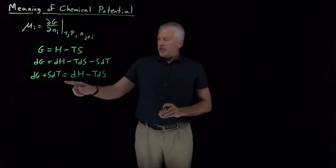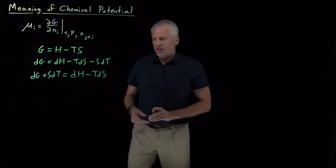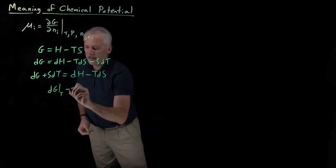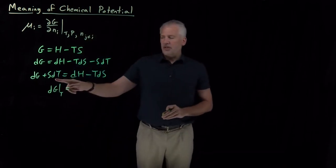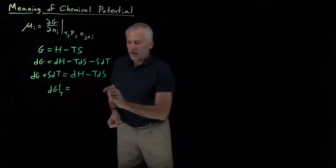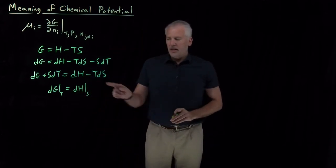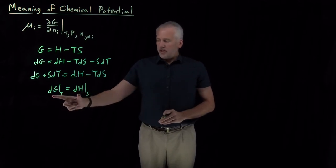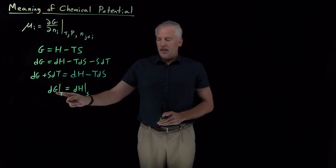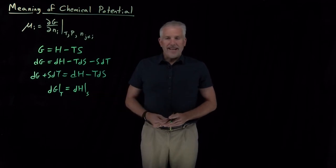Now if I bring the SdT term over to the other side, I can say dG plus SdT is equal to dH minus TdS. Since I often think about Gibbs free energy when the temperature is held constant, if the temperature is constant, the left side says dG at constant T, under which conditions the dT term goes to zero. On the right side, to make the TdS term go to zero, I have to hold the entropy constant.